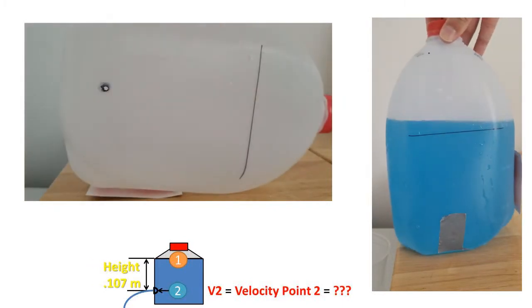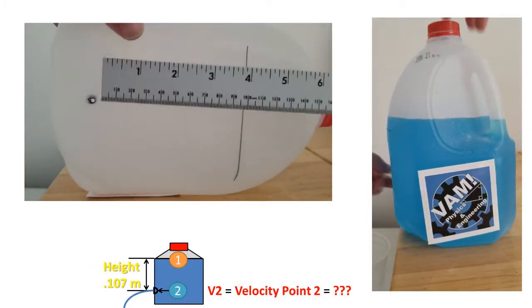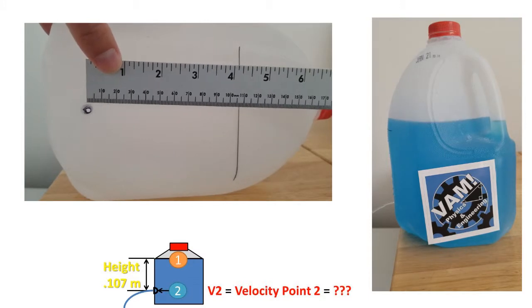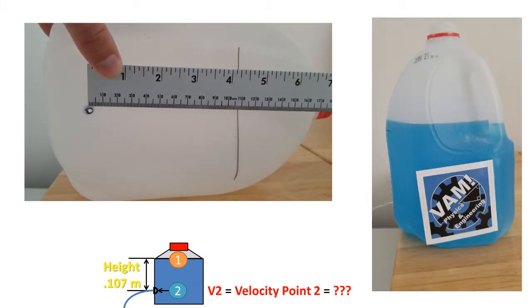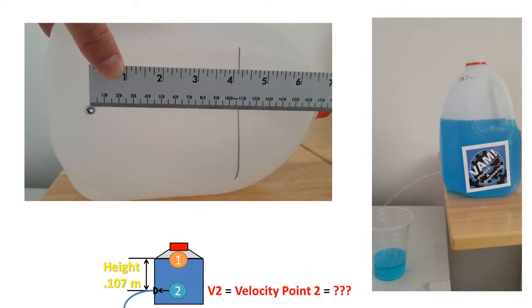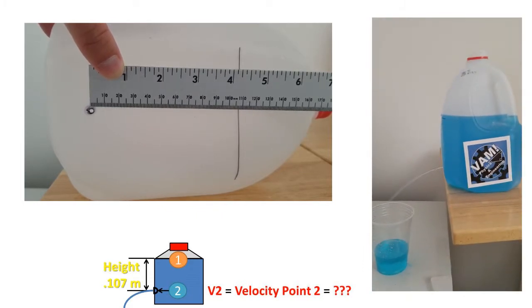In this problem, we have a jug of water that has a hole at 0.107 meters from the waterline on the jug. We fill the jug to the waterline and let the water flow out through the hole. We want to find the velocity of the water that is coming out of the hole in the jug.